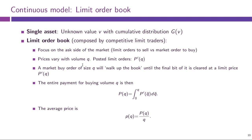Once this limit order book is composed, there will be a price schedule realized by it. Market traders face some price schedule and realize that prices vary with volume Q. We let P'(Q) denote the marginal price for the Qth unit you want to buy. You can buy the first unit at price P'(1), and if you want to buy two, you pay P'(1) for the first and P'(2) for the second, and so on.